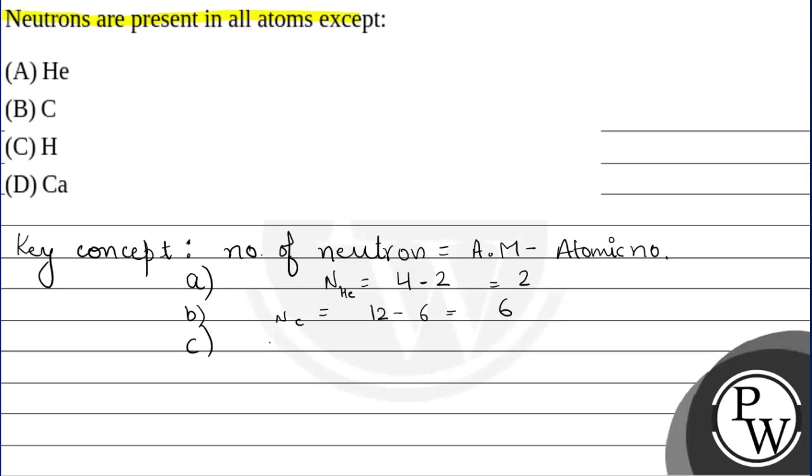But, agar hum baat karein Hydrogen ki (if we talk about Hydrogen), number of neutrons in Hydrogen: atomic mass is 1 minus atomic number is also 1. It means number of neutrons are 0.